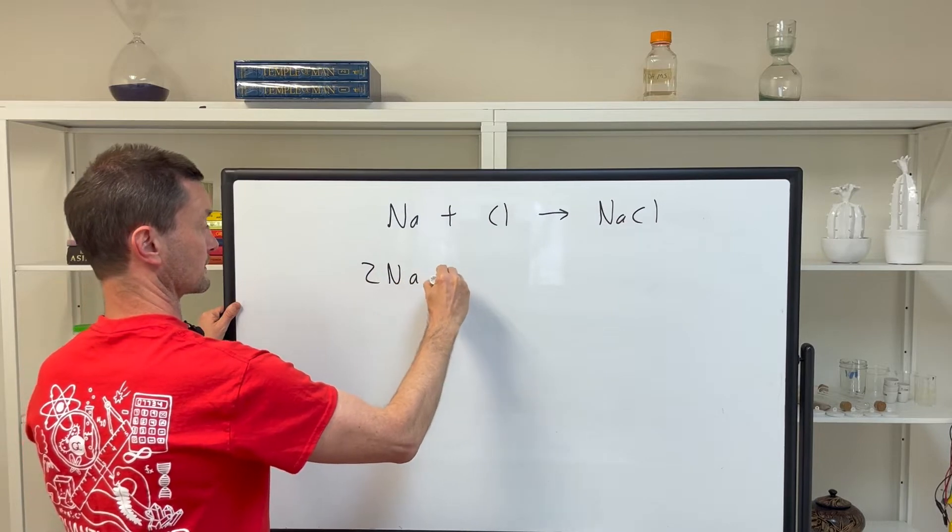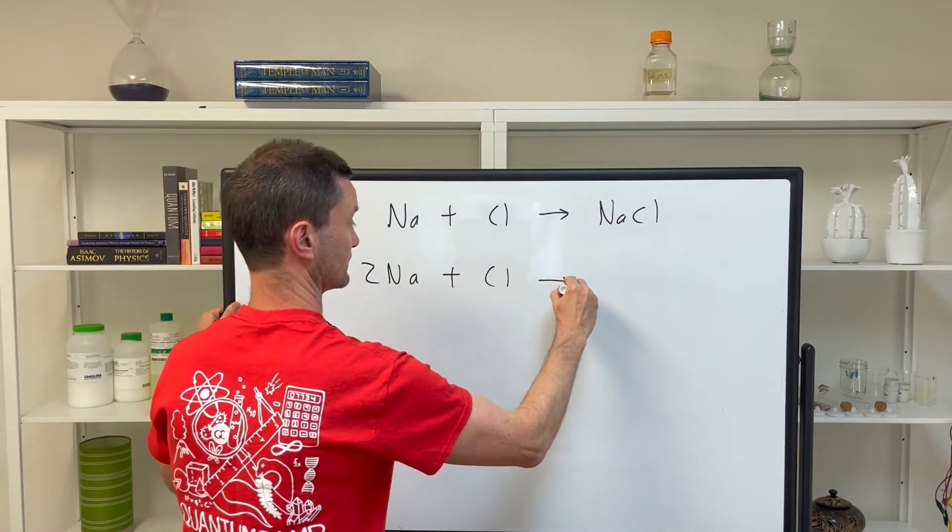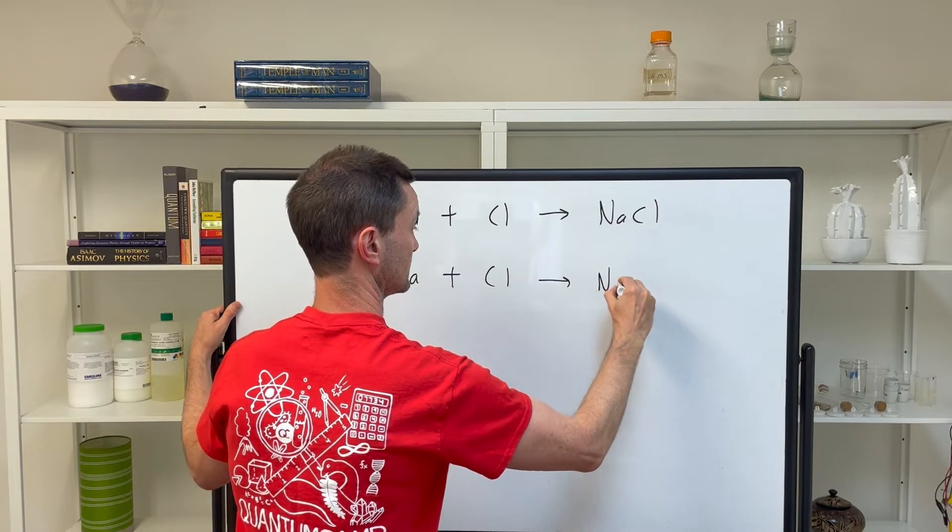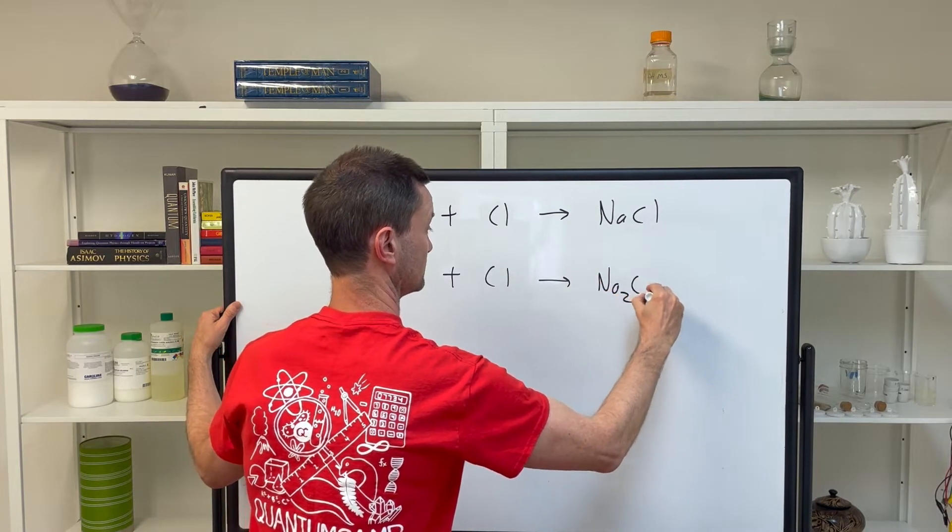And we don't know. Two sodiums plus one chlorine goes to a molecule of Na2Cl, still table salt.